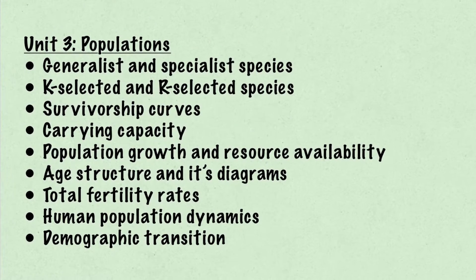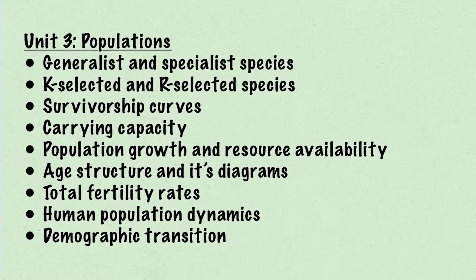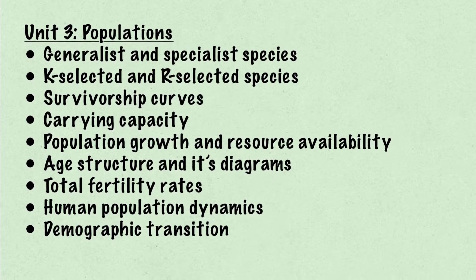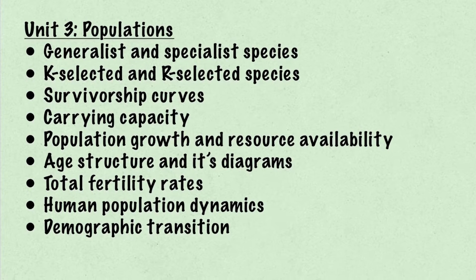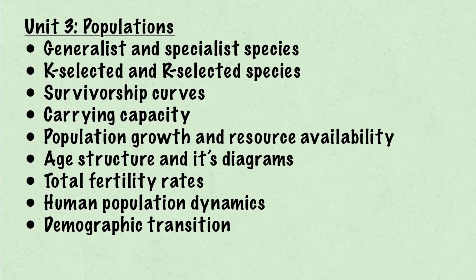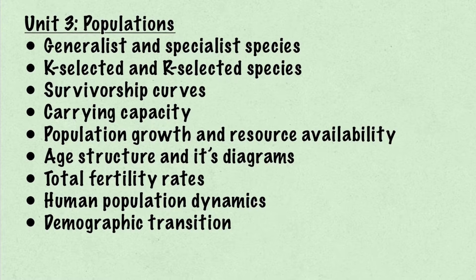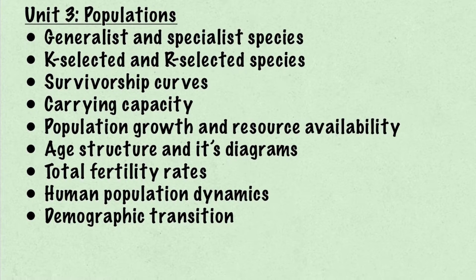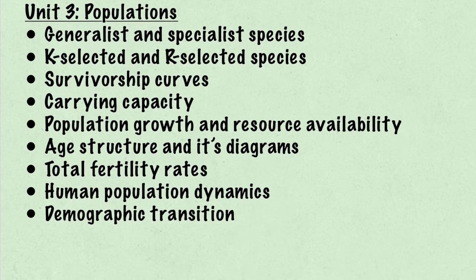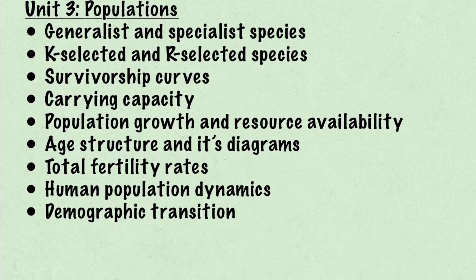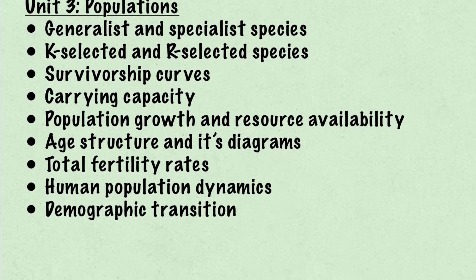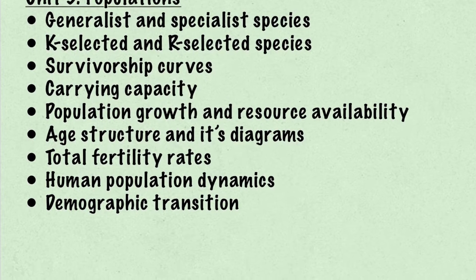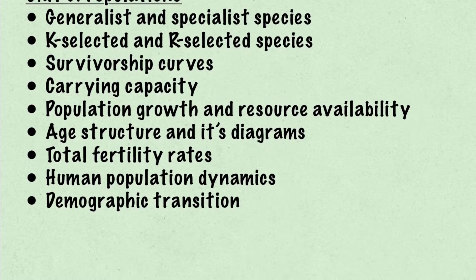Next, in Unit 3 we have Populations. This includes generalist and specialist species, K-selective and R-selected species, survivorship curves, carrying capacity, population growth and resource availability, age structure and its diagrams, total fertility rates, and human population dynamics.